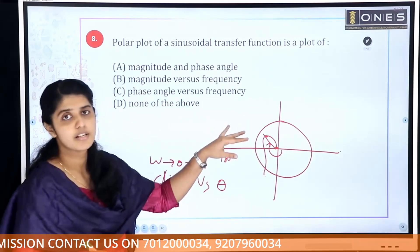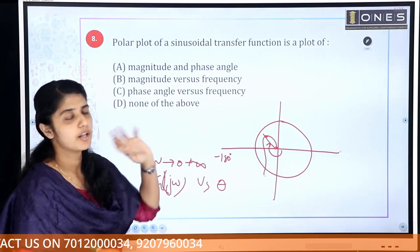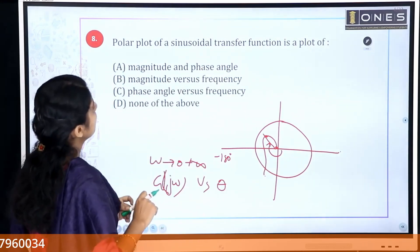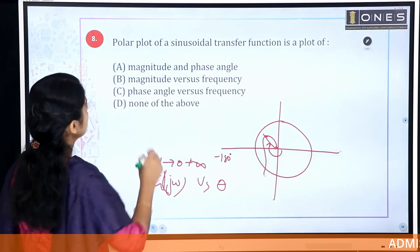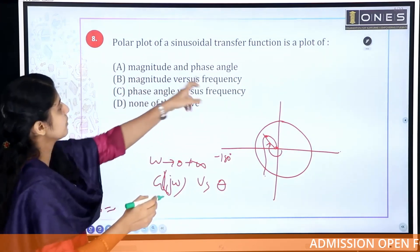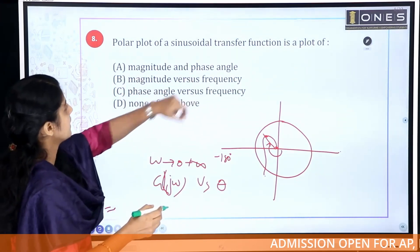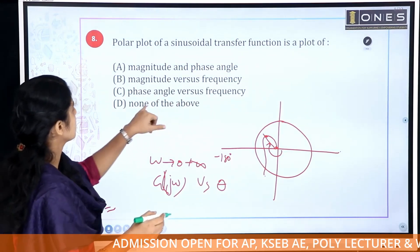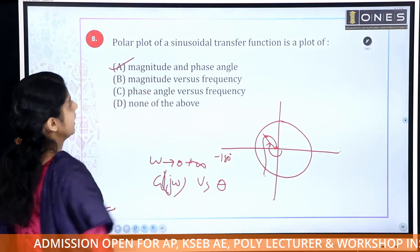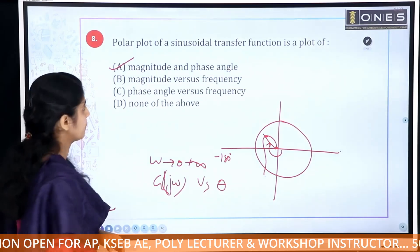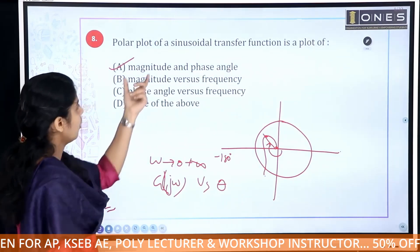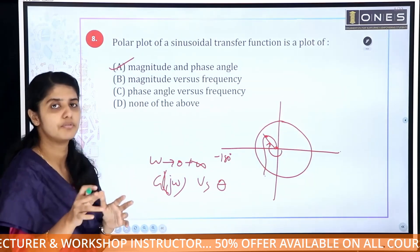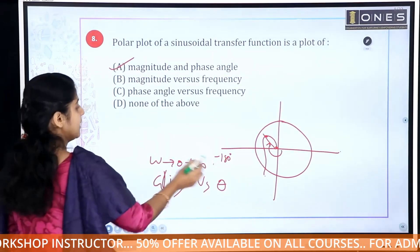The theta versus magnitude plot is the polar plot. The polar plot of a sinusoidal transfer function is a plot of magnitude vs. phase angle — that is option A. Omega changes from 0 to infinity across this range.